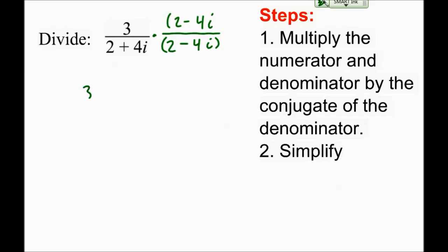So let's see what this looks like. This is 3 times 2 minus 4i. And this is 2 plus 4i times 2 minus 4i.